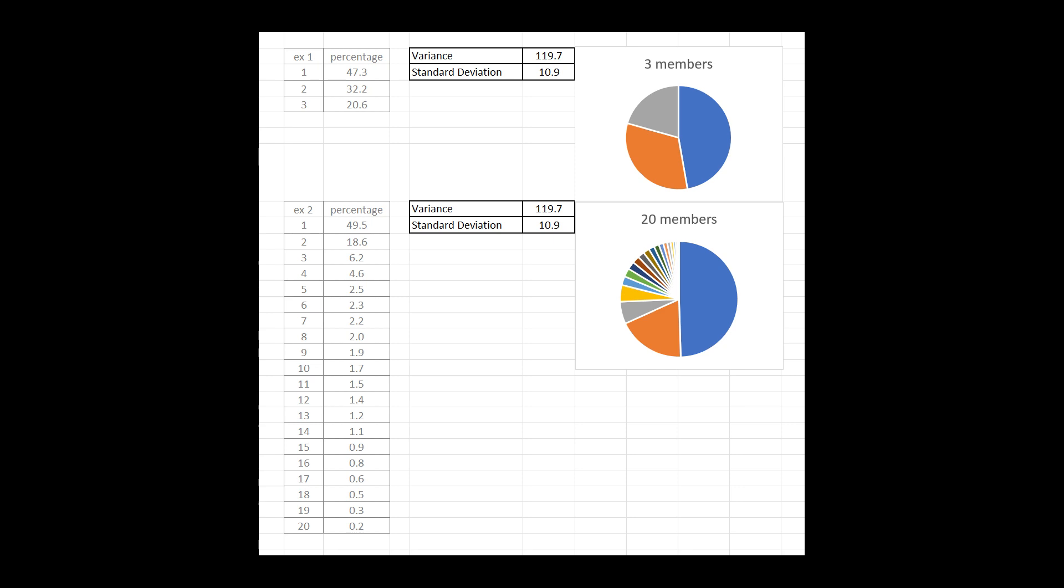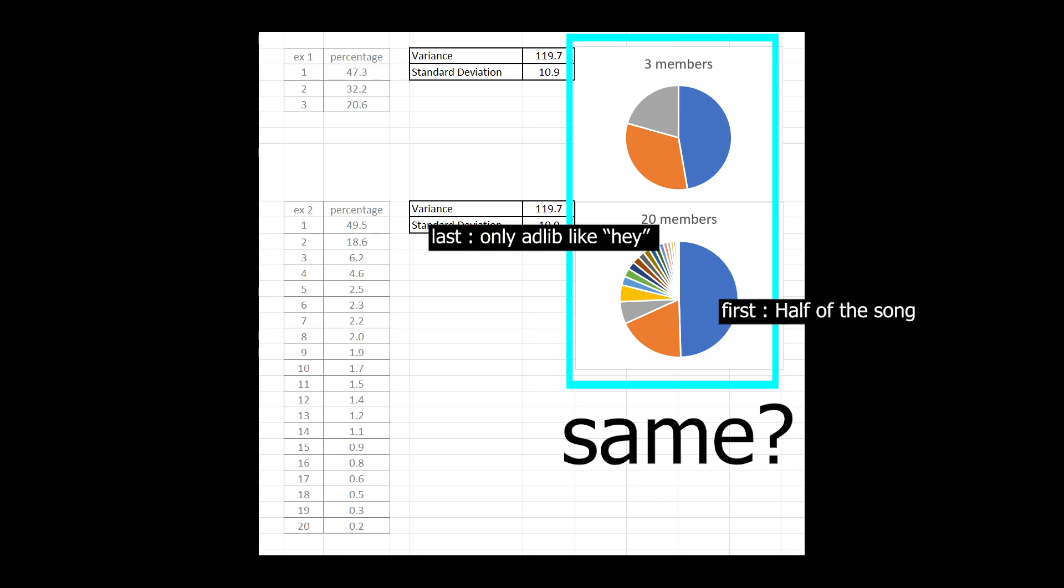Because if we compare an extreme example of three members with 20 members line distribution, while it has the same standard deviation, I don't think it has the same evenness. For the 20 member line distribution, it looks like one member sings half of the song while the other members only sing adlibs like, hey.